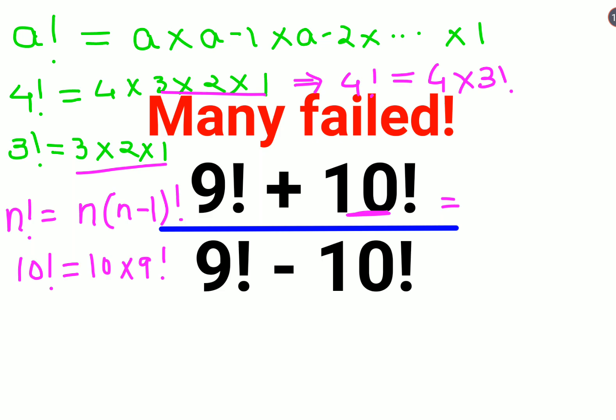So similarly here, let's write this. You will write 9 factorial as is, plus 10 factorial can be written as 10 into 9 factorial. Similarly, 9 factorial minus 10 into 9 factorial.